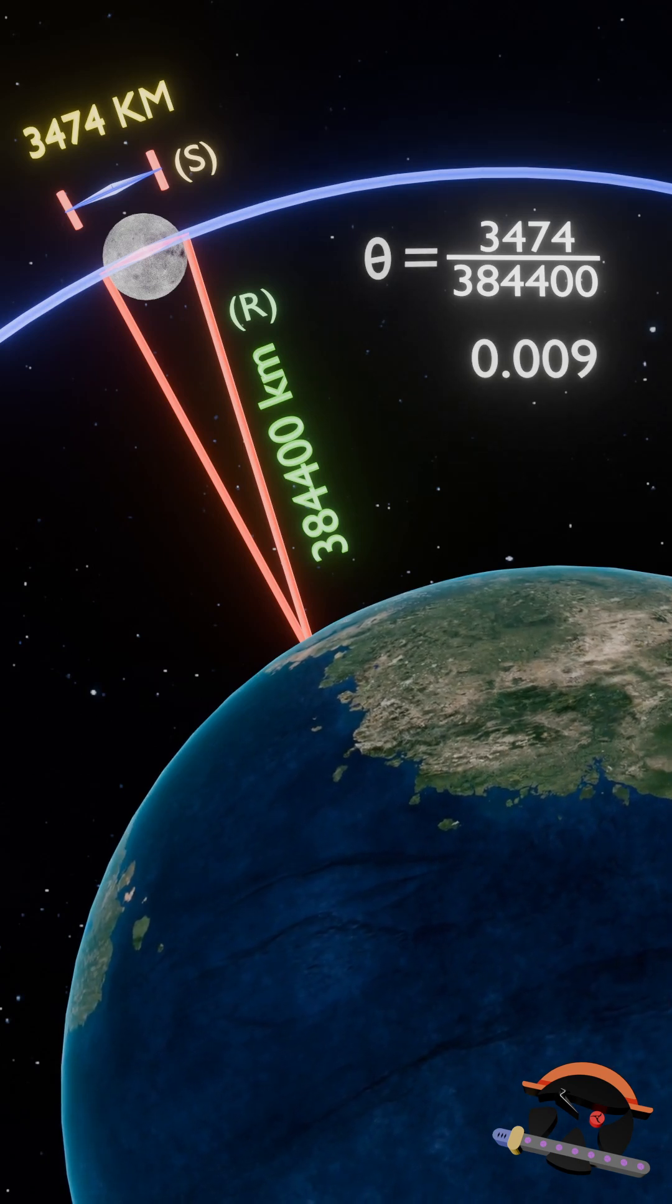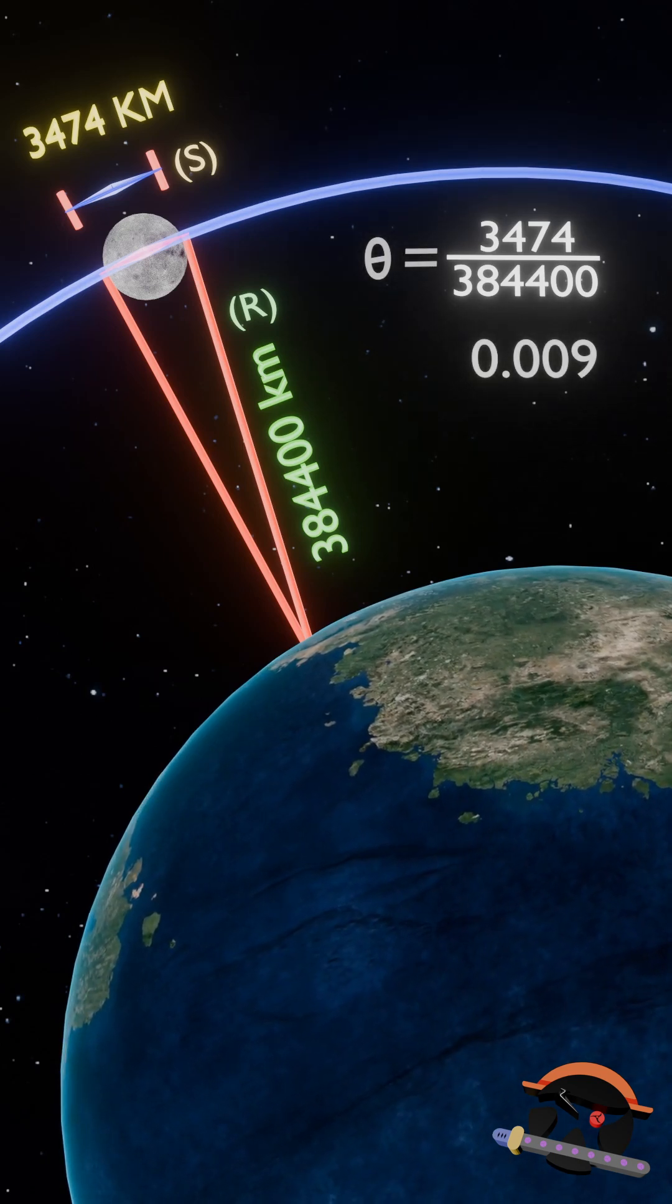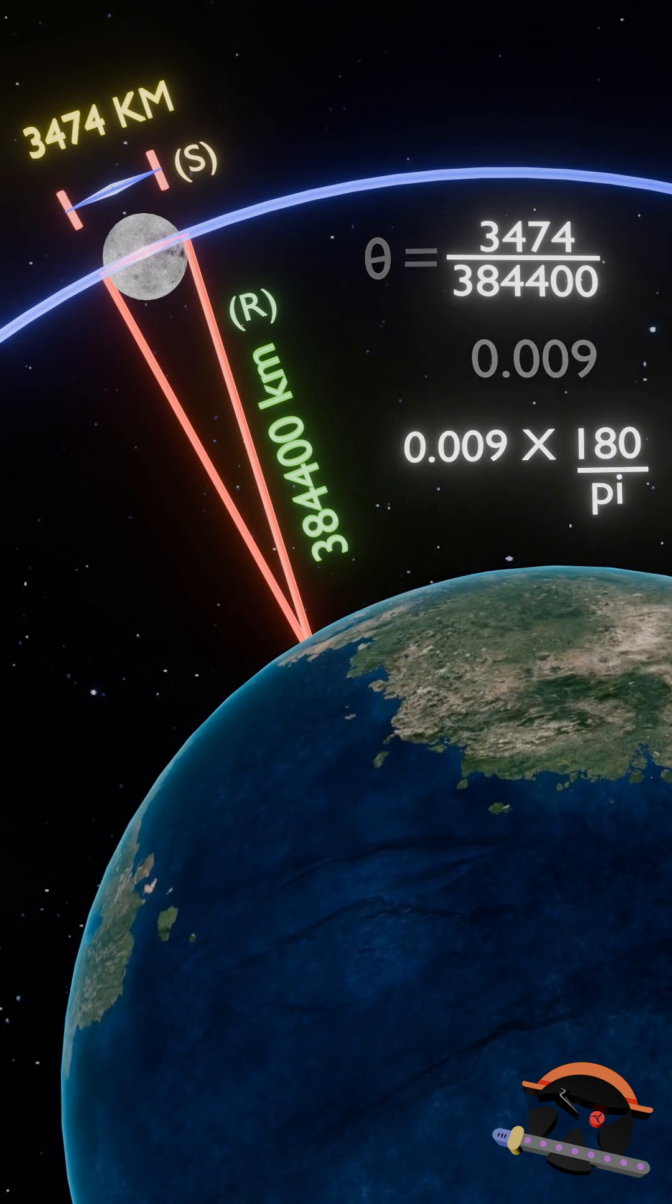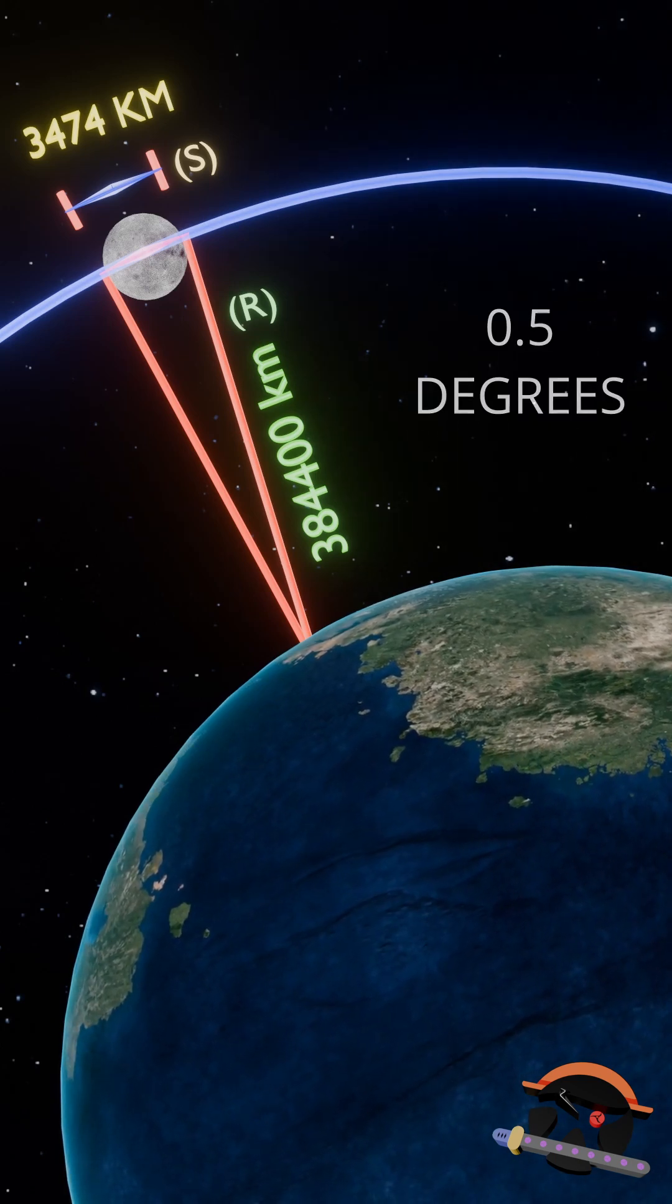Now, remember, this value has its units in radians and to convert it to degrees, we just have to multiply it by 180 by pi, which not to our surprise comes out to be 0.5 degrees.